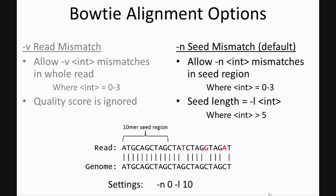-n is the default setting of Bowtie and controls how many mismatches to allow in a given seed region. This seed region starts at the 5' end of the read, and the length of which is dictated by the -l setting, where l must be greater than 5. Using the setting -n 0 -l 10 may produce alignments as shown in this example. This setting may be useful for cases where your reads have a significant drop-off in quality scores at the 3' end.